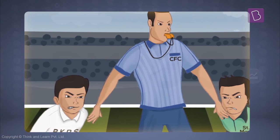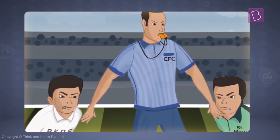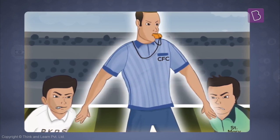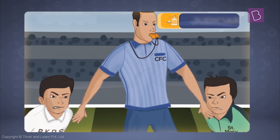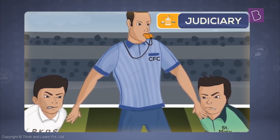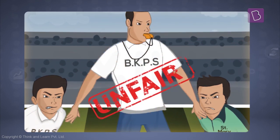Let's say there's a football match held between your school and another school. In this football match, the referee is the protector of the rules. Now it would be unfair to have someone from your school as the referee, as they might be biased. And even if they aren't, many of their decisions will be questioned since they're from your school.